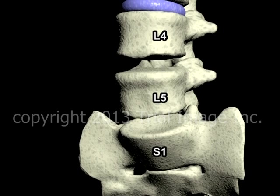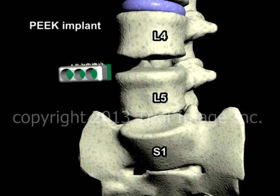Currently, the most commonly used solution for filling these gaps is to place an implant device. Intervertebral implants are commonly composed of a material known as PEEK, short for polyether ether ketone. Implants composed of PEEK are strong, lightweight, and do not stimulate an abnormal immune response in the recipient.